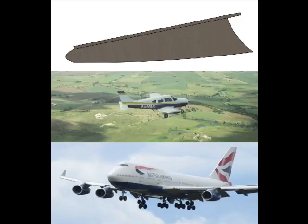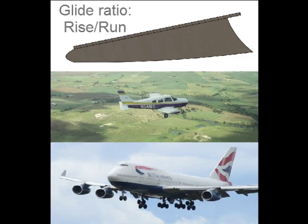The angle the gliding plane makes with the horizontal gives the glide ratio. This is defined as the distance traveled vertically over the distance traveled horizontally.